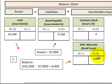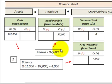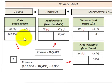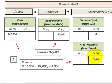So we were able to determine — we knew the known amount for our bonds payable — and by subtracting, the cash amount received less the bonds payable, the balance goes to additional paid-in capital of the warrants.